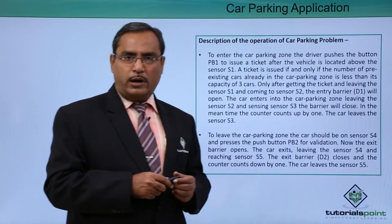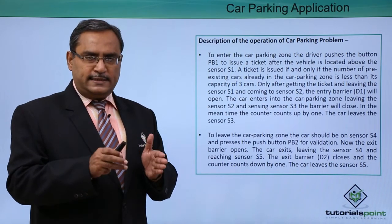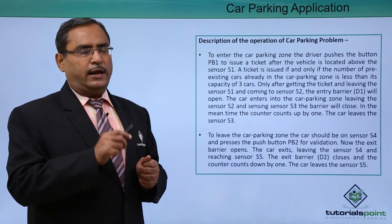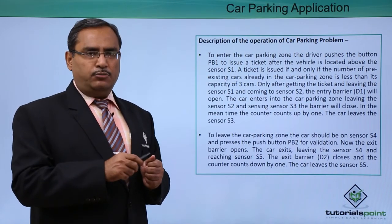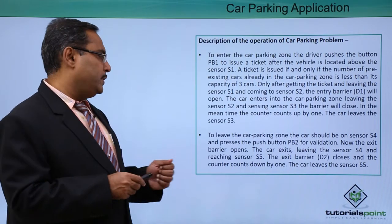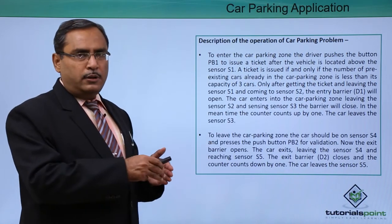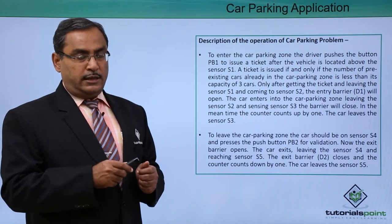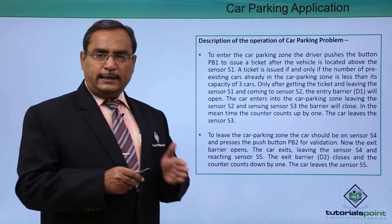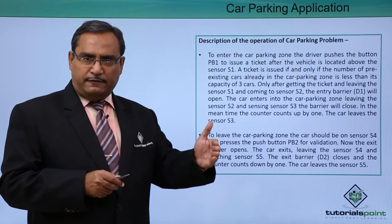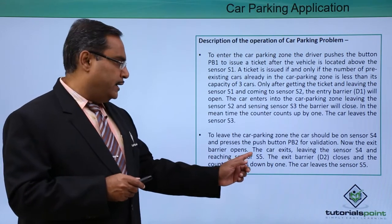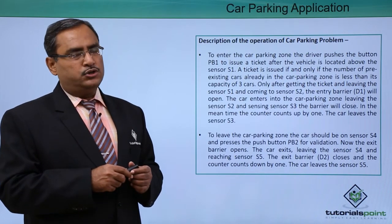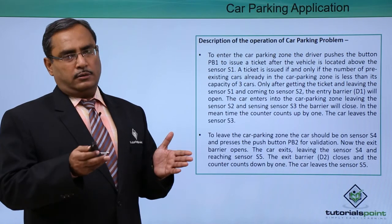The entry barrier D1 will close. When the car leaves sensor S3, having entered the parking zone and parked, sensor S3 will be released. The counter will get increased — if the initial count was 1, it becomes 2. While leaving, the car will be positioned on sensor S4 and the driver will push PB2 for the exit request. Door D2 will open and the car moves from S4 to S5. When it reaches S5, exit door D2 closes, the car leaves S5, and the counter decrements by 1 so a new car can enter.